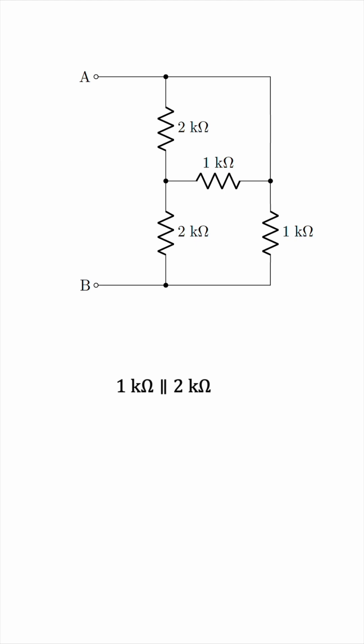We have 1 times 2 over 1 plus 2, giving us 2 thirds. So, the parallel combination of those two resistors is 2 over 3 kΩ.